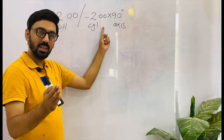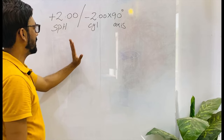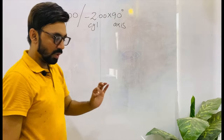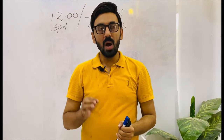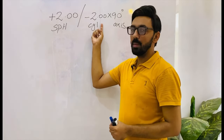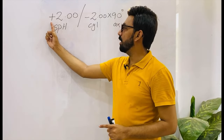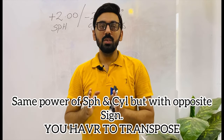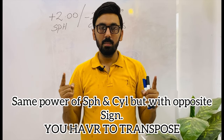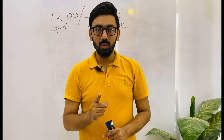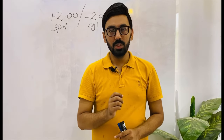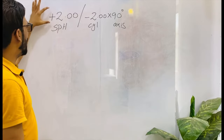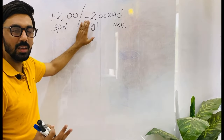The power of the sphere and the cylinder are the same, but you can see the signs are different. The spherical has a plus sign and the cylindrical has a minus sign. So remember: whenever you face any prescription in which the power of the spherical and cylinder are the same but with opposite sign — spherical carries plus and cylindrical carries minus — you have to transpose that prescription to judge the type of astigmatism. Apparently it looks like a mixed astigmatism because we have plus spherical and minus cylinder.